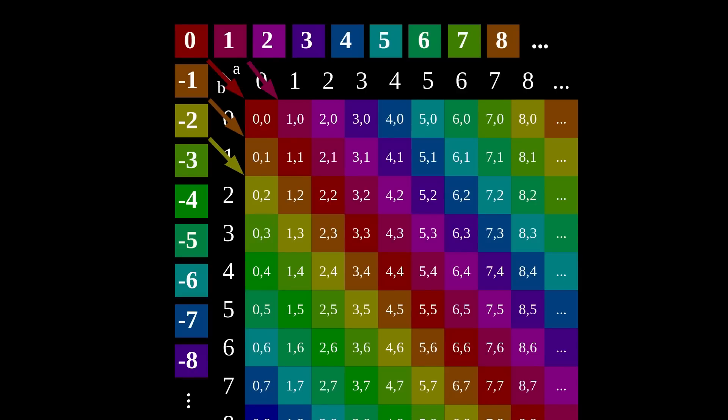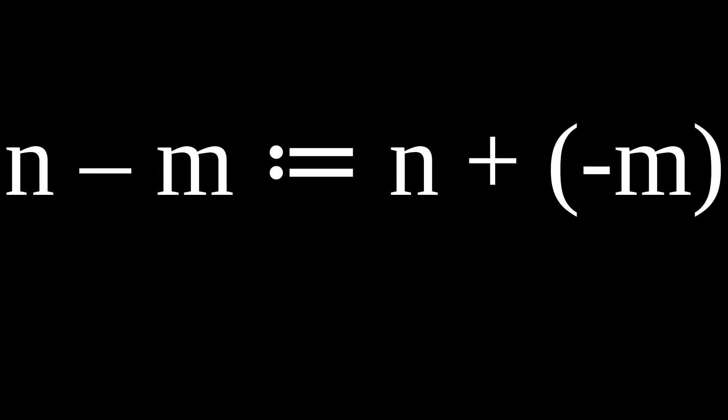And now, finally, we can, for integers n and m, define n minus m as exactly n plus negative m. This works for all integers, and you can show that, for example, n minus n is always the zero integer.